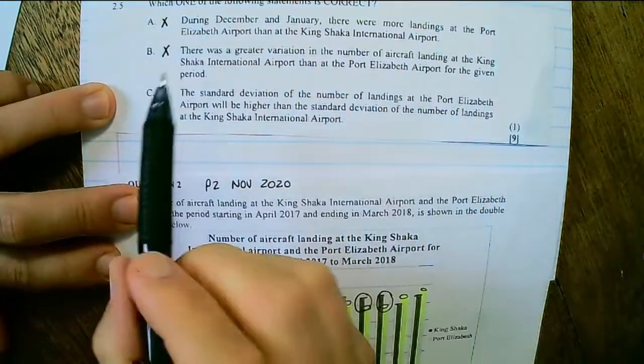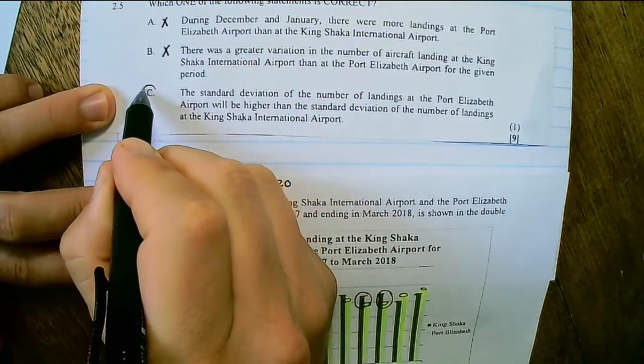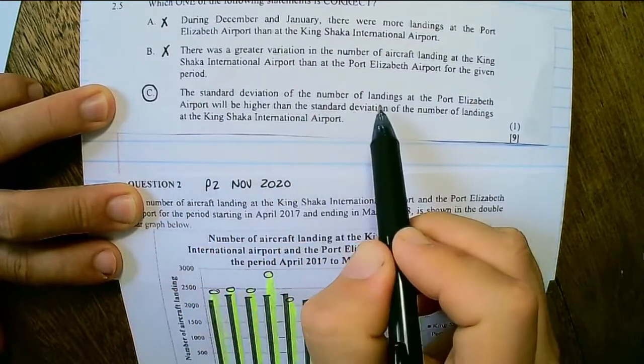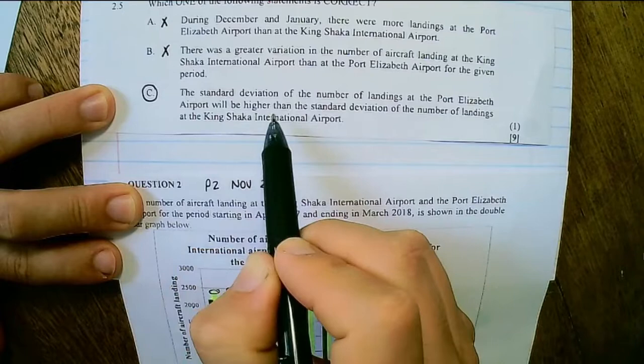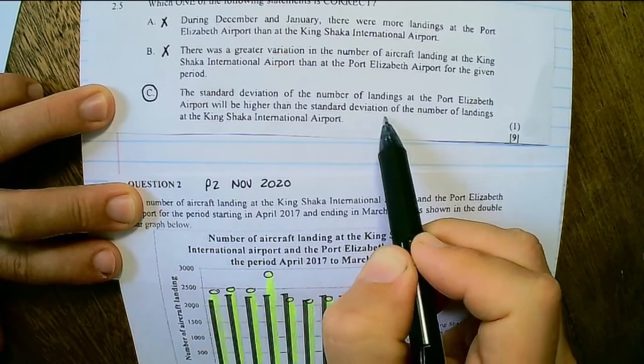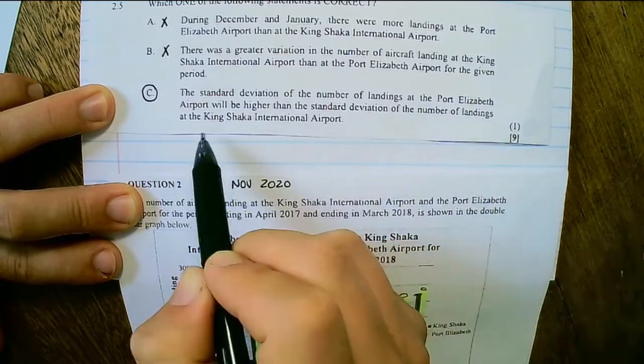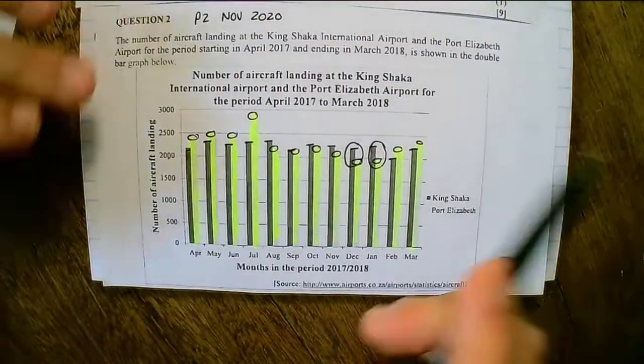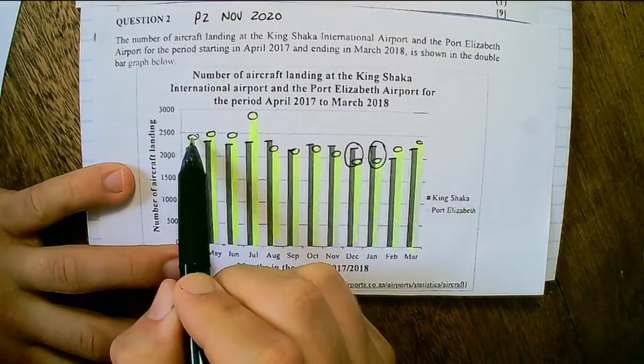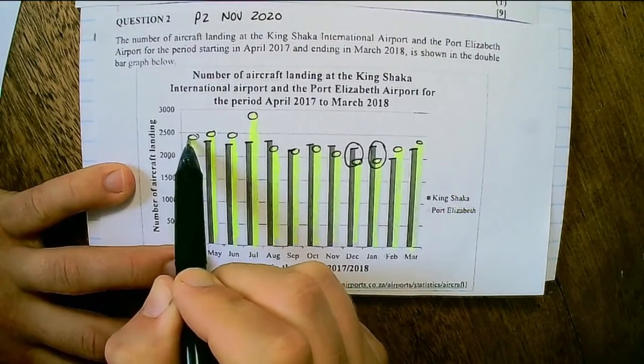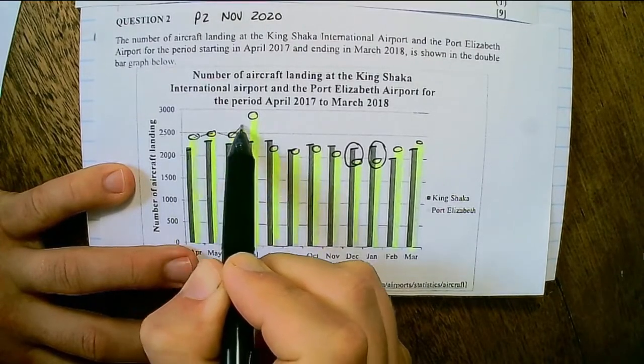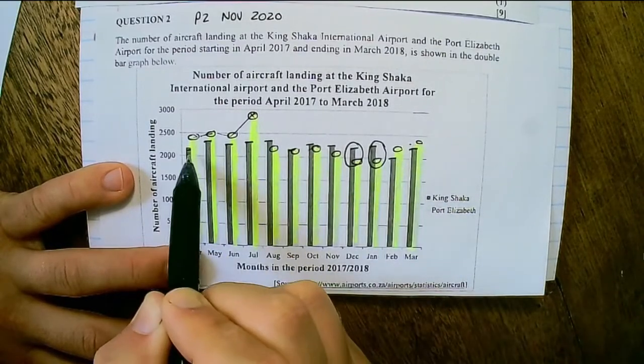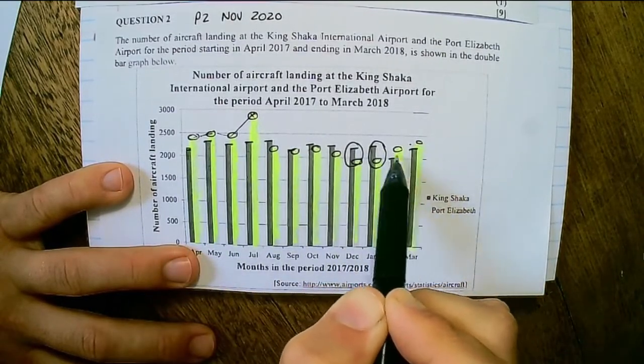And without reading the last one, we can see that it is true. Option C: The standard deviation of the number of landings at the Port Elizabeth airport will be higher than the standard deviation of the number of landings at the King Shaka international airport. That is true. For standard deviation, you can see that the difference between data points are higher for the Port Elizabeth airport than that of the King Shaka airport.